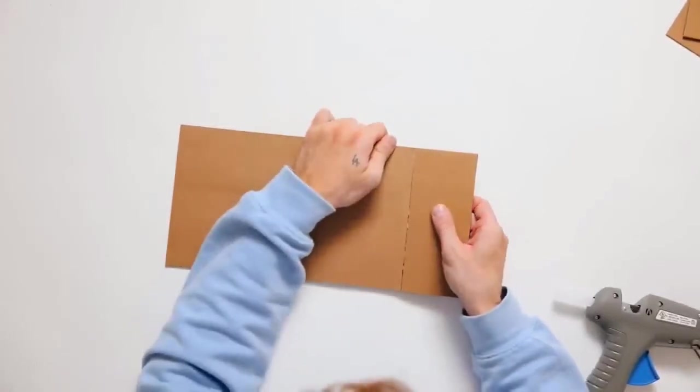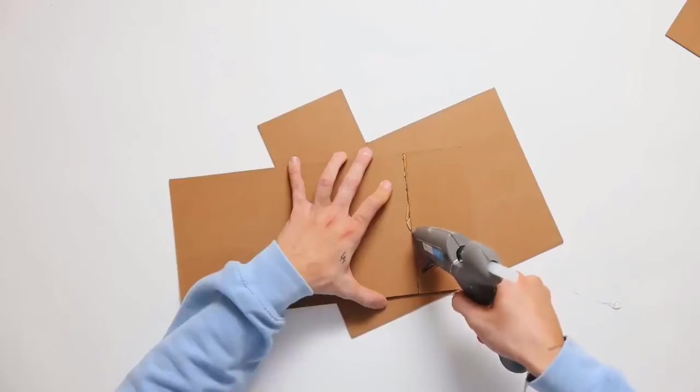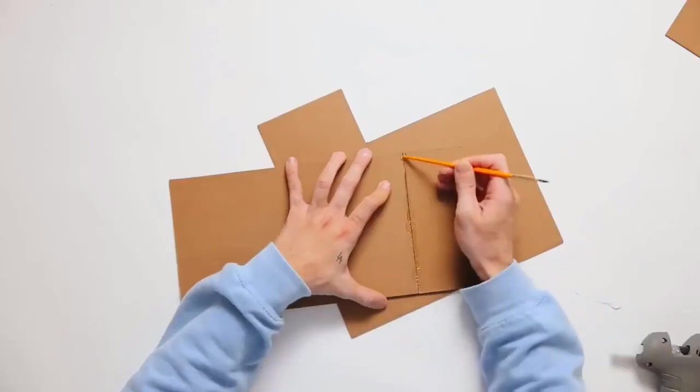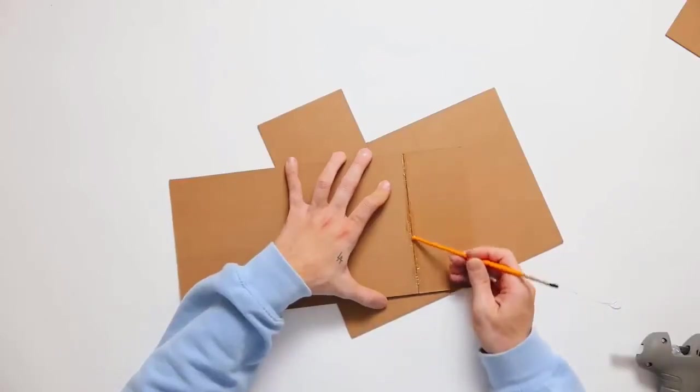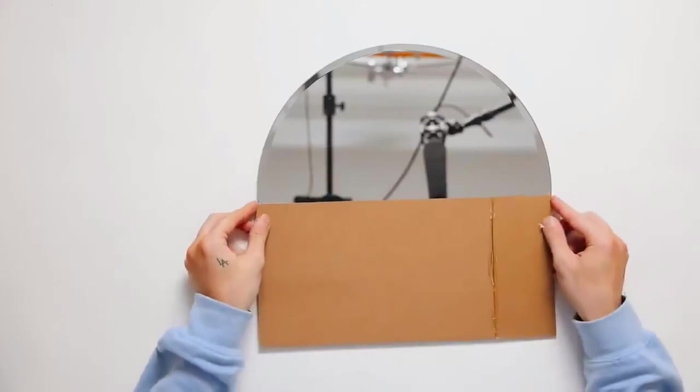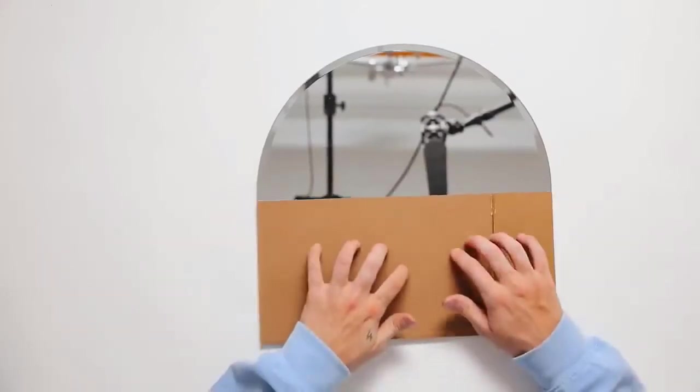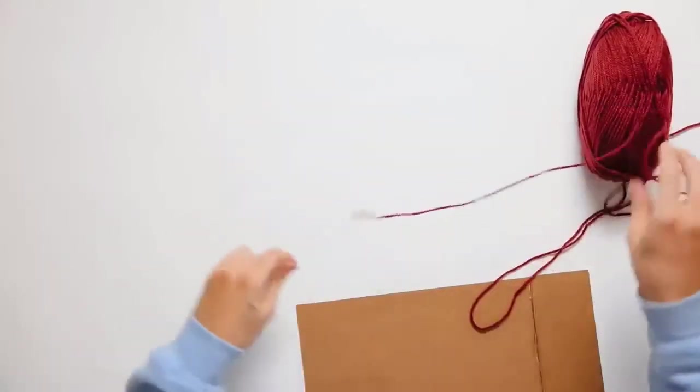I'm gluing the two pieces together that will create our bottom section. You can do this out of cardboard as well if you don't have chipboard. I'm reinforcing it with hot glue. This is going to go on the bottom half and create that half-circle shaped mirror.